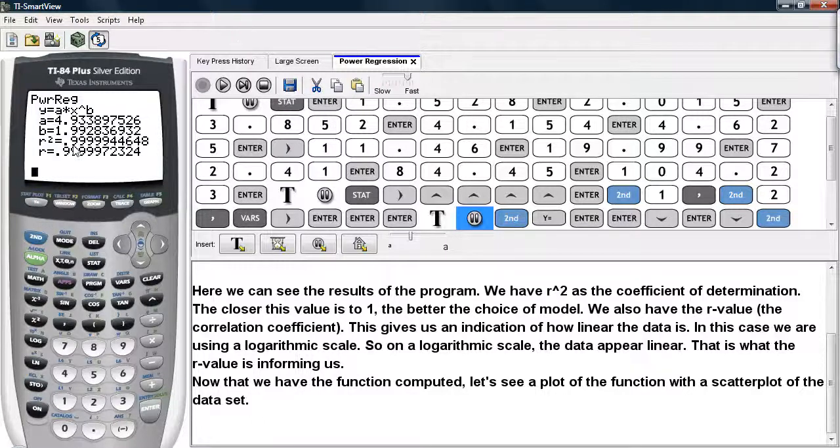This R squared value is very, very close to one. The R value is also very close to positive one and that is what the program is telling us, that on a logarithmic scale, this data would look very linear.